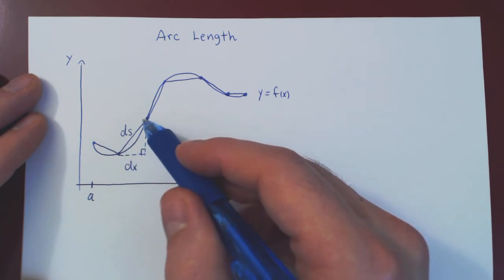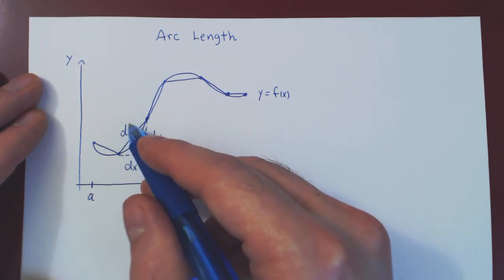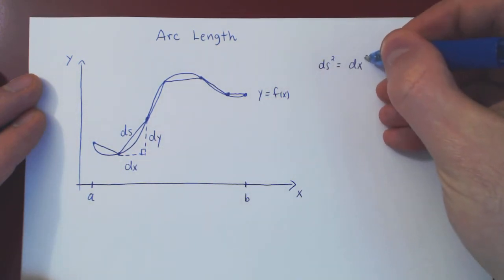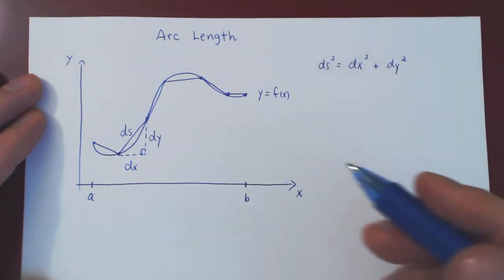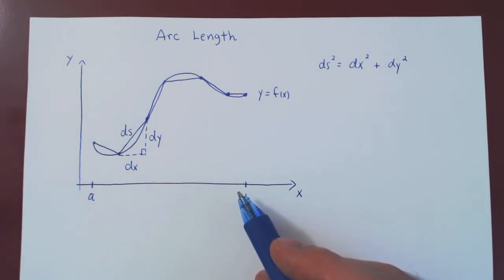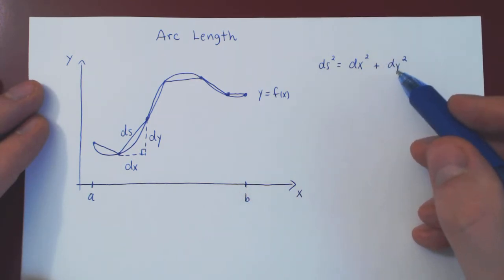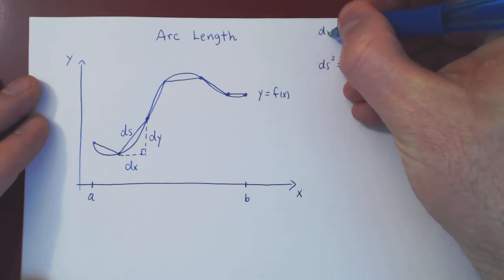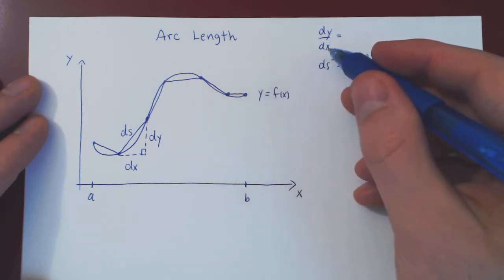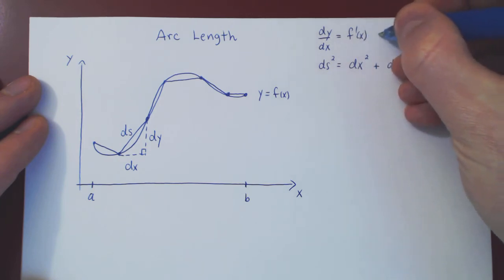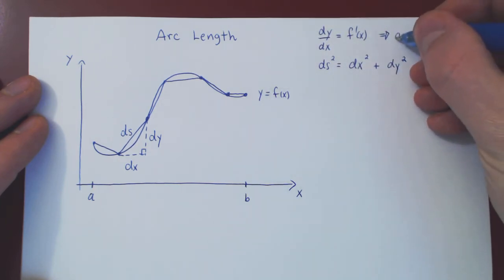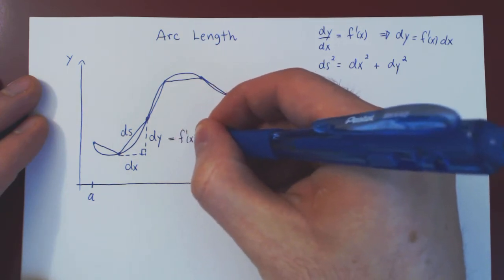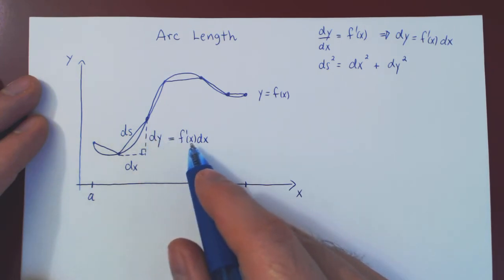What we want is the length of this segment. We can use Pythagoras' theorem: ds squared equals dx squared plus dy squared. Now, we would like to integrate along the x-axis, so we need everything in terms of x and dx. To find dy in terms of dx, look at y equals f of x and take its derivative: dy over dx equals f prime of x. So, multiplying both sides by dx, dy equals f prime of x times dx.